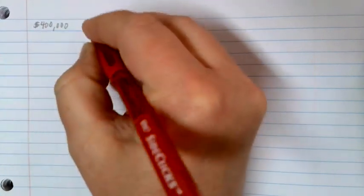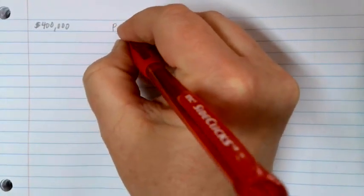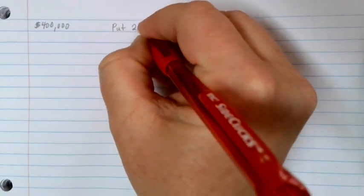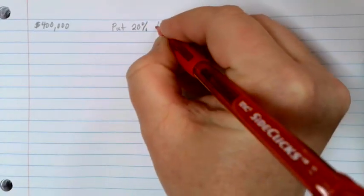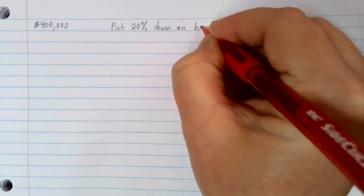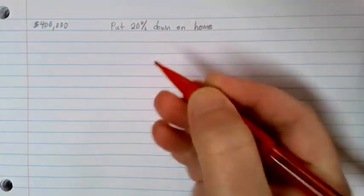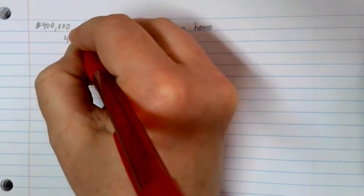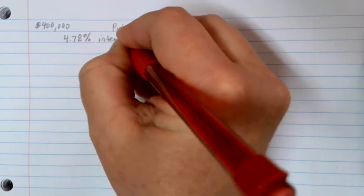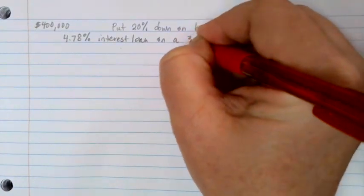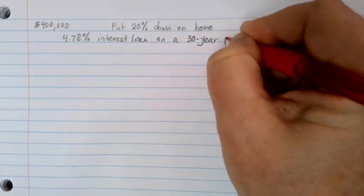Let's suppose that we have a $400,000 home that we'd like to buy. We plan to put 20% down on the home. We qualify for a 4.78% interest loan on a 30-year payoff schedule.